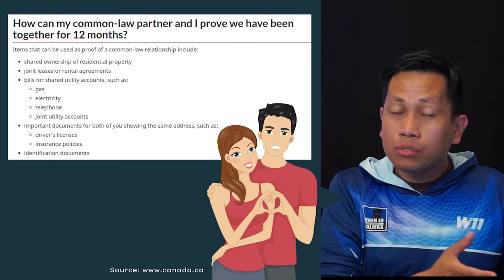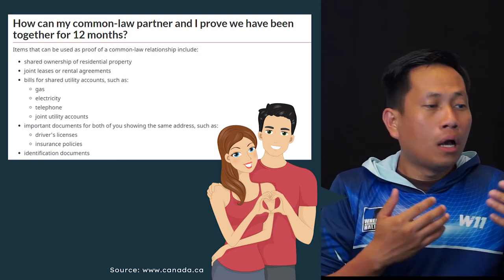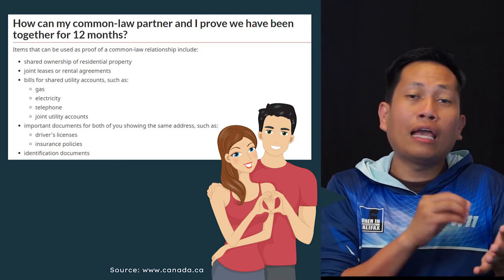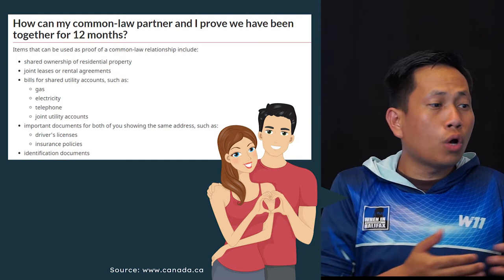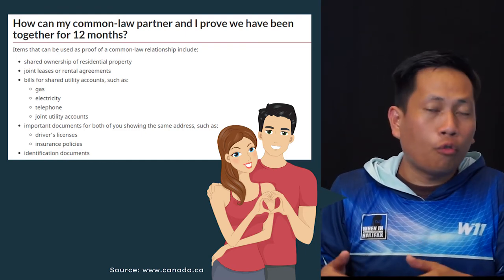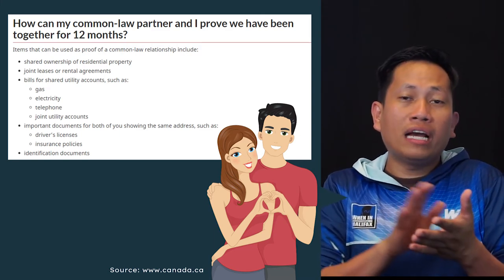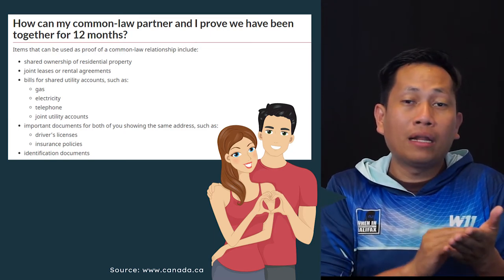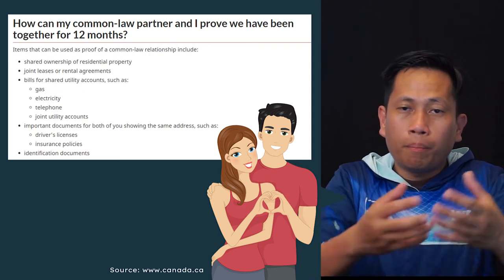So if you own a house, your name must appear on the mortgage or shared ownership document. Another way is to show a joint lease or rental agreement. Maybe you're renting an apartment or a condominium — you need to show that you are living together and that both of your names are on the rental contract.